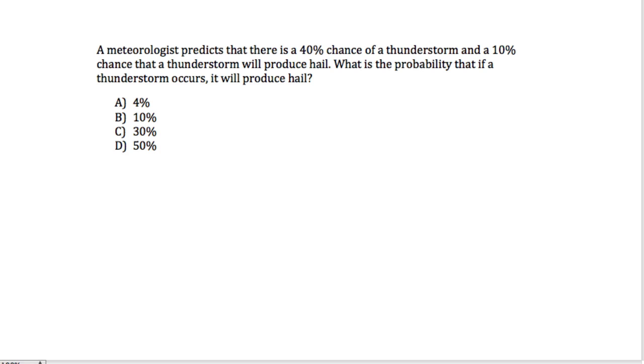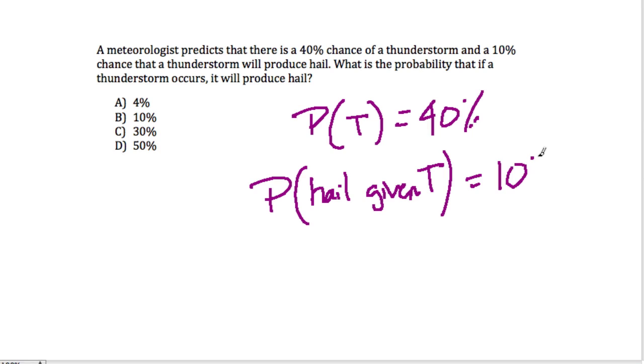And in another example, they give us this problem. I actually don't like this problem, because I think the wording is a little misleading. But let's cut through it. A meteorologist predicts that there's a 40% chance of a thunderstorm. So the chance there is a thunderstorm, T, equals 40%. And there's a 10% chance that a thunderstorm will produce hail. So the probability that there's hail given T is 10%.